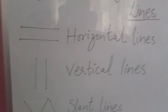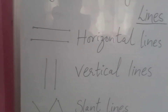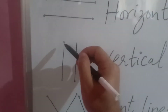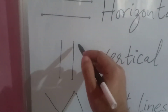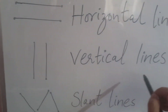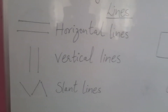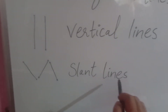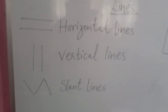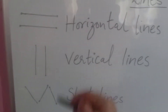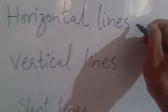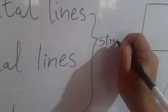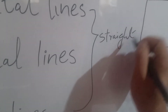Next is the vertical line. If you see a line coming from up to down or down to up, it is a vertical line. And then we have slant lines. All three of these — horizontal, vertical, and slant — are called straight lines.